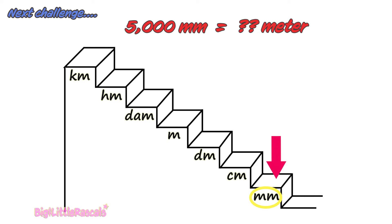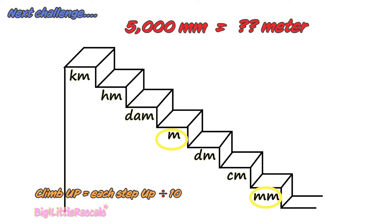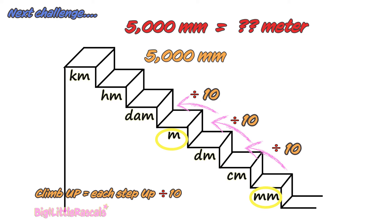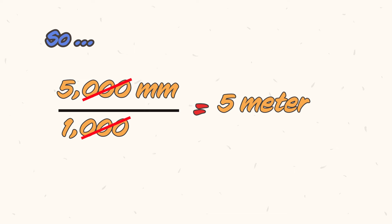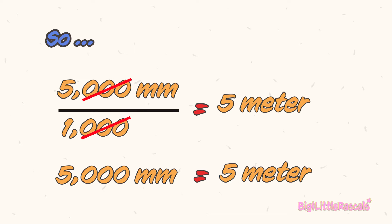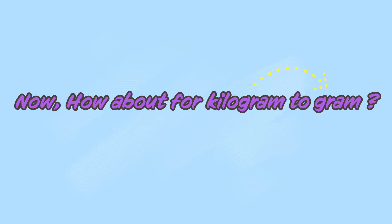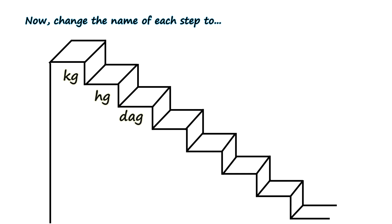Now let's try another challenge: 5000 millimeters is how many meters? Find the millimeter on the stair, then find the meter. Jump up from millimeter to meter — each step up, divide by 10. That's 1, 2, and 3 jumps. So 5000 divided by 10, by 10, and by 10 gives you 5 meters.